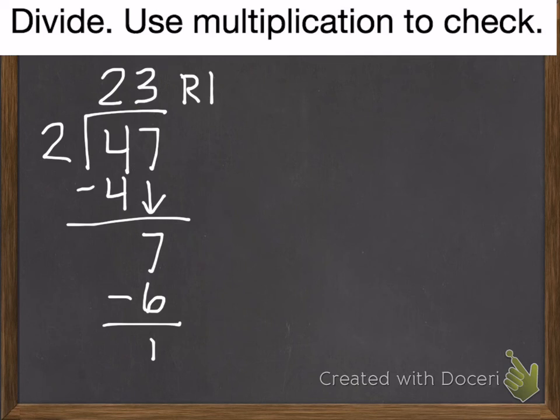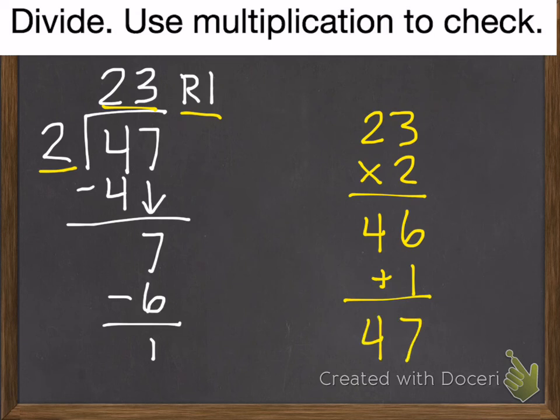Now check it. 23 times 2. 2 times 3 is 6. 2 times 2 is 4. Add in our 1 remainder, and we get 47. So the answer is 23 remainder 1.